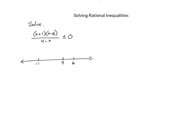Testing 7 (to the right of 6): positive times positive over negative gives a negative result. Testing 5 (between 4 and 6): positive times negative over negative gives a positive result. Testing 0 (between negative 1 and 4): positive times negative over positive gives a negative result. Testing negative 3 (left of negative 1): negative times negative over positive gives a positive result.